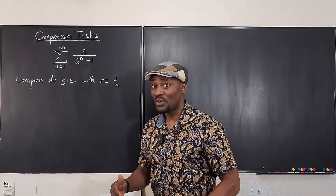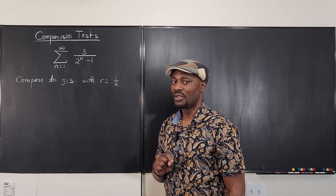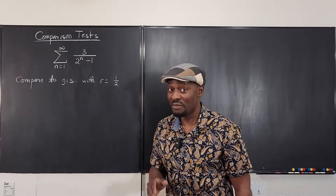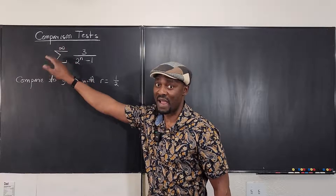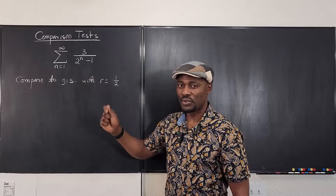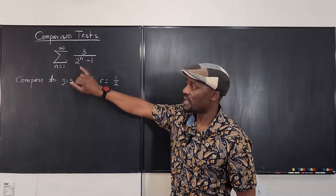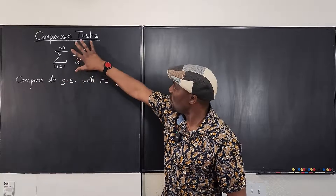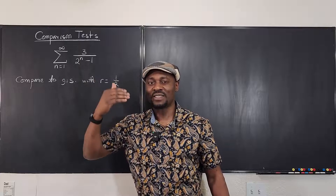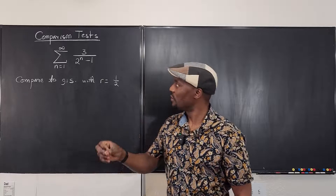The next thing you want to do is decide what you suspect — do you think it's going to converge or diverge? That determines how you do your direct comparison. As you keep going to infinity, the exponent gets bigger and bigger, and then the whole term gets smaller and smaller. So the common sense decision is to say: I think this is going to converge.